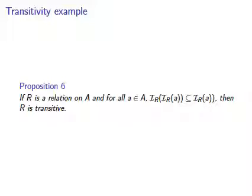One more example. The statement of this one is more complicated. Again assume that r is an arbitrary relation on an arbitrary set A. This time we are saying that if for any element little a in set big A, the image of its image is a subset of the image, that's enough to show that r is transitive. Take a moment to consider what that means. It's also important that you recognize that the subset assertion is actually part of the hypothesis, not part of the conclusion.